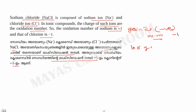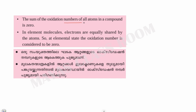The loss of electrons gives a positive ion — oxidation. The gain of electrons gives reduction — positive ion. The oxidation number is plus 1 in this case. The sum of the oxidation numbers of all atoms in a compound is zero.